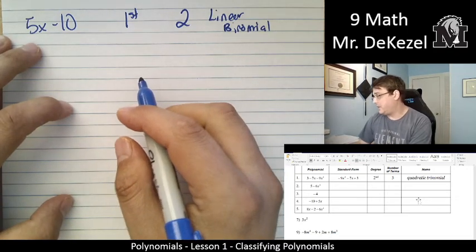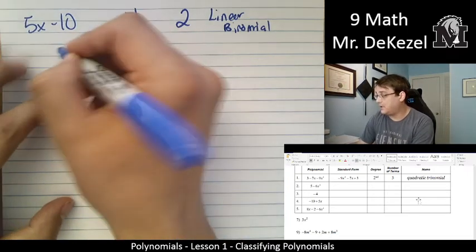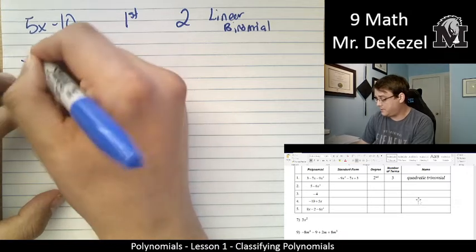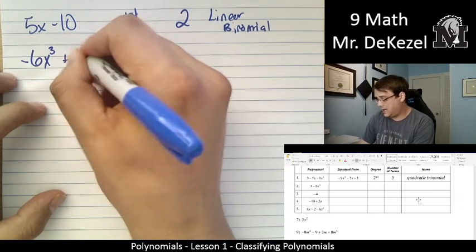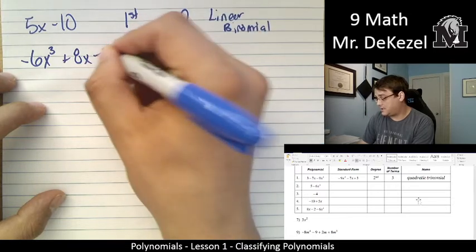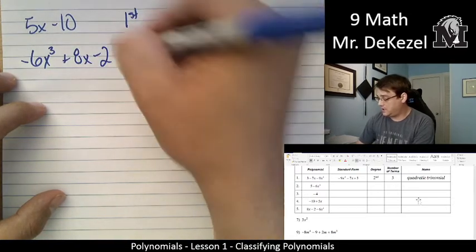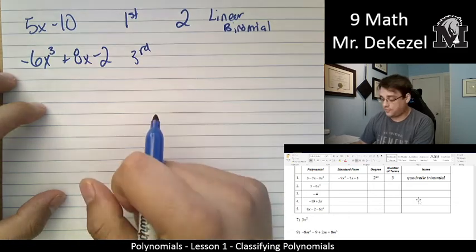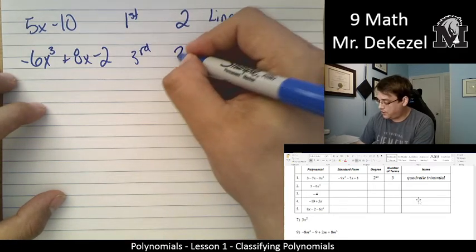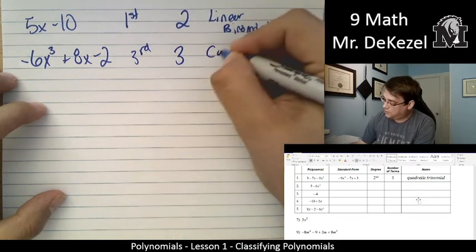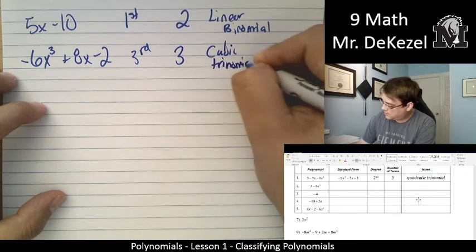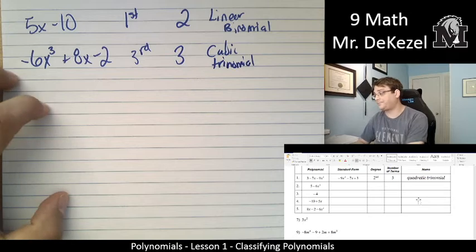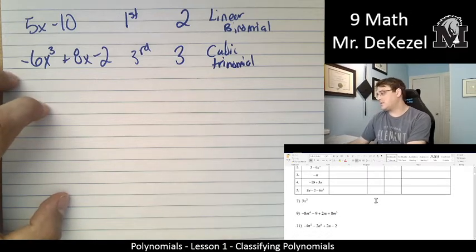Our next one is a trinomial. I can see it's three terms. I put the largest exponent first: 6x³ + 8x - 2. It is third degree. The highest exponent is 3. It is a trinomial. So, it is a cubic trinomial.